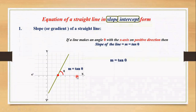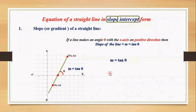Also we have derived the formula for the slope. When you know any two points (x2, y2) and (x1, y1) on the line, then slope can be calculated by the formula: y2 minus y1 divided by x2 minus x1.